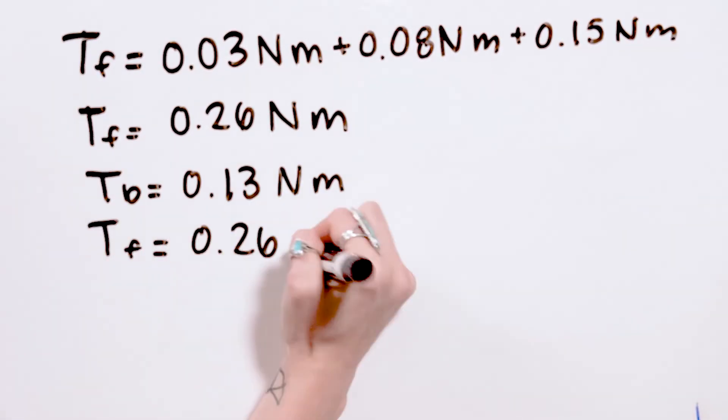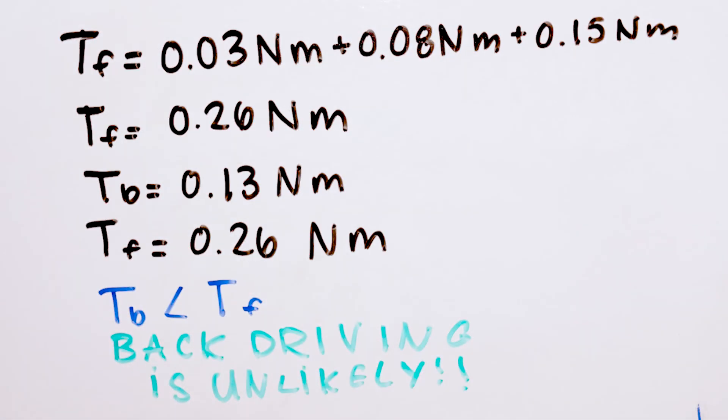So the total friction torque of the assembly is 0.26 newton meters. In this example, the backdriving torque of 0.13 newton meters is much less than the total friction torque of 0.26 newton meters for the screw assembly, which means that backdriving is unlikely in this application.